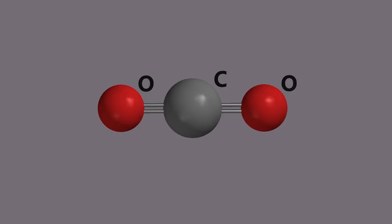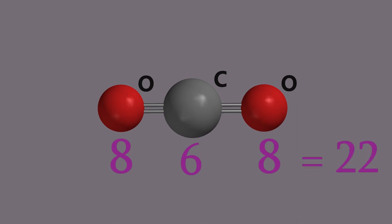For example, here's a molecule of carbon dioxide. It contains a carbon atom and 2 oxygens. The carbon has 6 protons, and each oxygen has 8, for a total of 22 protons. That means it must have 22 electrons too. We don't normally need to worry about the number of neutrons, since they don't affect the charge.